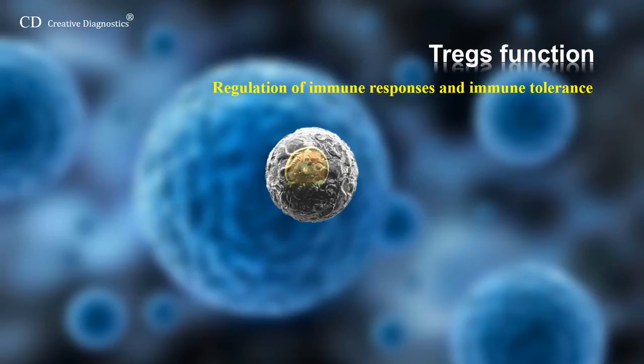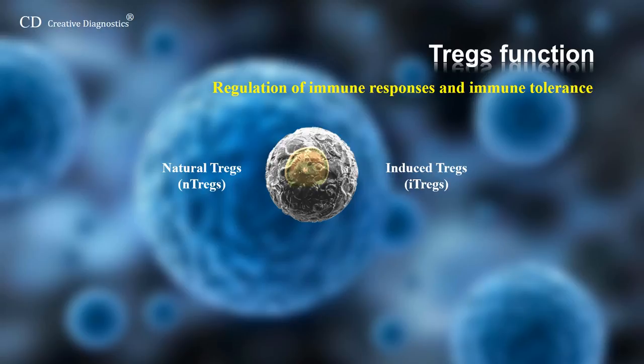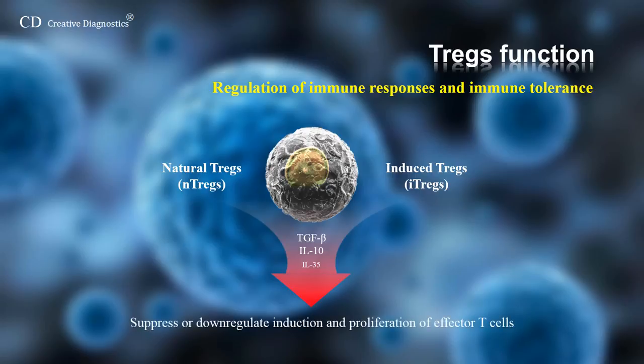A subset of TH cells with regulatory function is identified as Tregs. Treg subsets include thymically-derived or natural Tregs and Tregs that are induced via post-thymic maturation. The two cytokines mostly associated with Tregs are interleukin-10 and transforming growth factor beta. Importantly, Tregs can themselves secrete these cytokines and use them to carry out their suppressive function. Tregs are immunosuppressive and generally suppress or downregulate induction and proliferation of effector T cells.